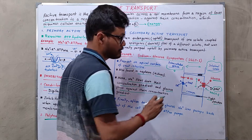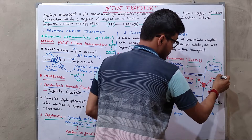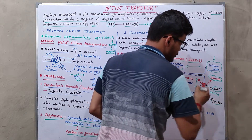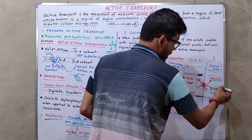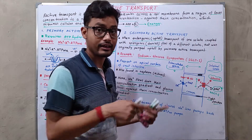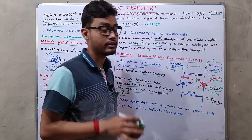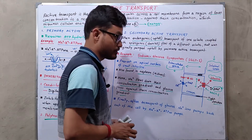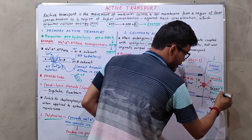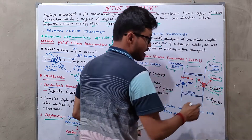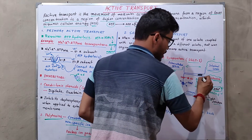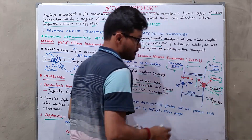Both glucose and sodium are transported at the same time. Glucose is transported against its concentration gradient, while sodium is transported down its concentration gradient — from higher concentration to lower concentration. Glucose moves from lower concentration to higher concentration.